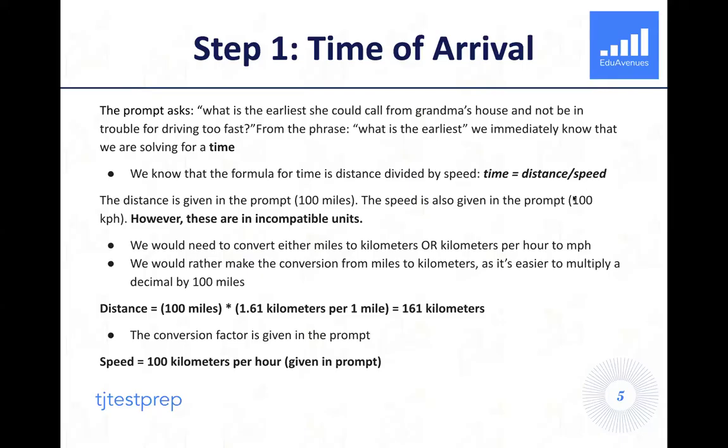We're not supposed to exceed that maximum limit. So if we're aiming to prevent Christina from getting in trouble, we want to go at a maximum of 100 kilometers per hour. They're asking for the earliest, so we're going to take the maximum speed there so we can get there as fast as possible without violating the speed limit. Here's the issue: we have a distance of 100 miles, but our speed is given in kilometers per hour. These units are fundamentally incompatible. We either need to convert our distance of 100 miles into kilometers, or we need to convert our speed of 100 kilometers per hour into miles per hour.